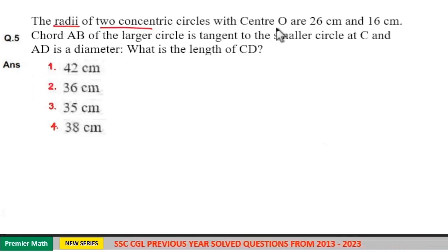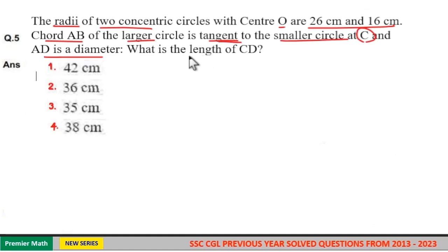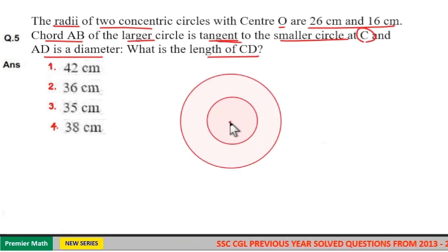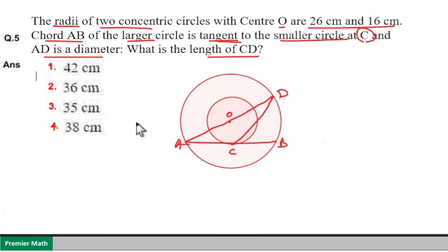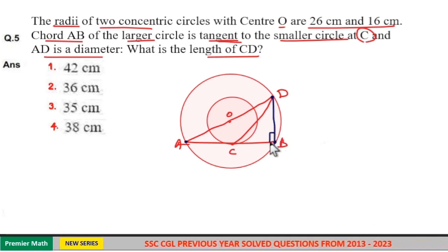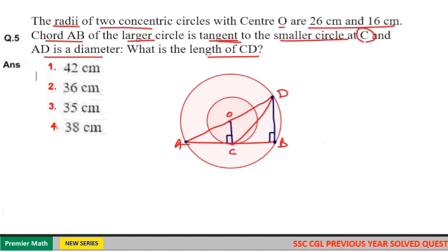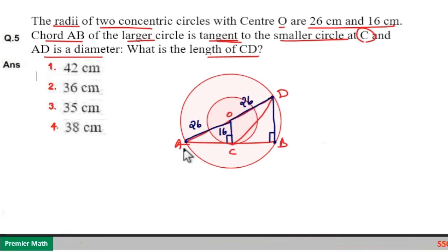Two concentric circles with radii 26 cm and 16 cm. Chord AB of the larger circle is tangent to the smaller circle at C, and AD is a diameter. We need to find the length of CD. AD is a diameter, which creates a 90-degree angle at any point on the circumference. Point B is on the circumference, so that angle is 90 degrees. The radius creates 90 degrees with the tangent, and the radius of the smaller circle is 16.